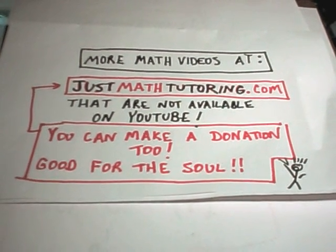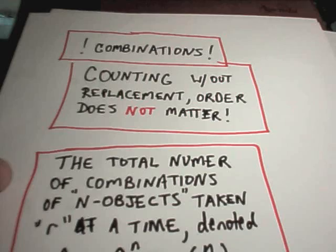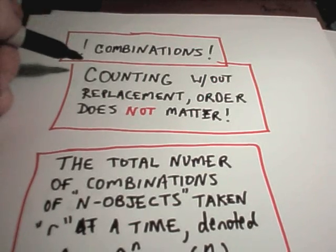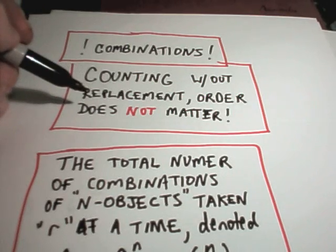Alright, in this video I'm going to talk about using combinations to do counting. Combinations basically are when you're doing the following scenario: you're counting without replacement and the order does not matter.